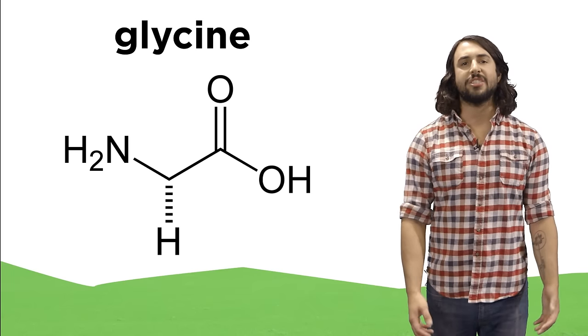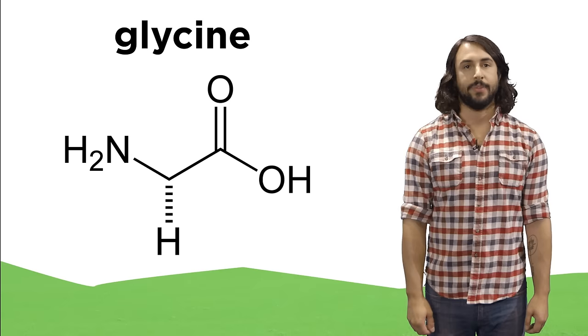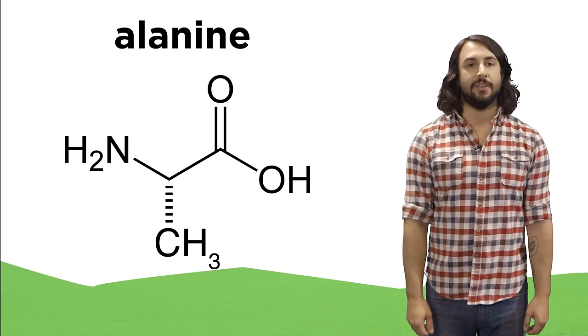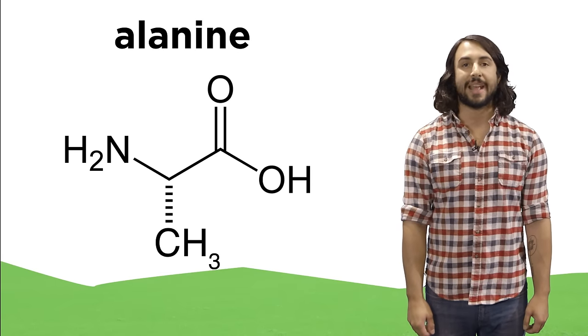If the R group is just a hydrogen atom, we call this amino acid glycine. If it's a methyl group, we call this alanine. There are about twenty of them, and they have a wide variety of R groups that can be put into different categories.